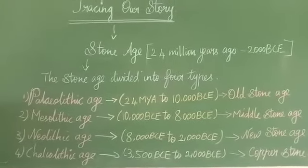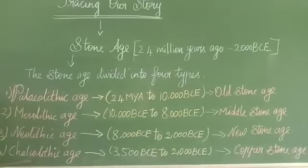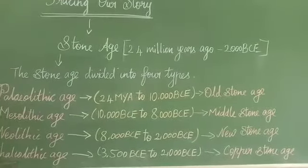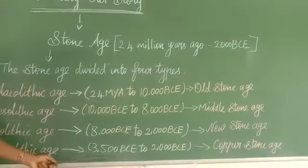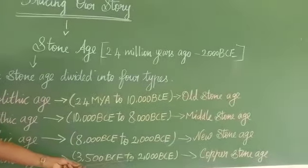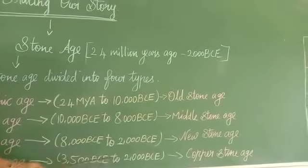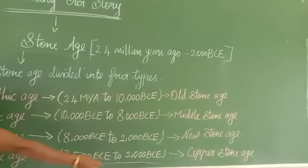The fourth stage is the Chalcolithic Age. Chalcolithic Age starts from 3,500 BCE to 2,000 BCE. Chalcolithic Age is also known as Copper Stone Age.